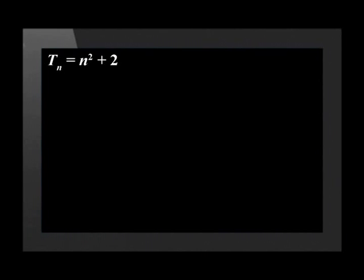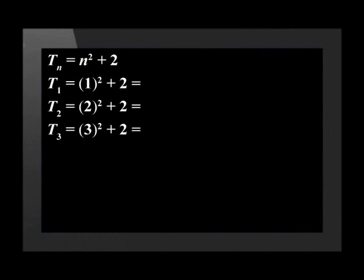Let's find the first four terms by substitution. We substitute 1, 2, 3, and 4 in place of n in the formula. We get term 1 equals 3, term 2 is 6, term 3 is 11, and term 4 is 18.